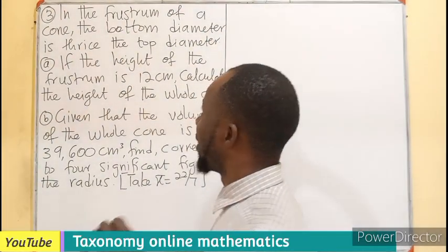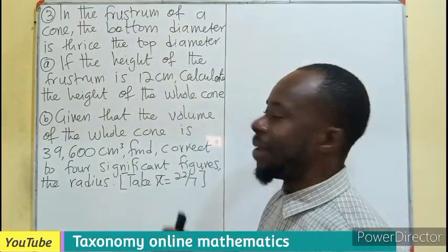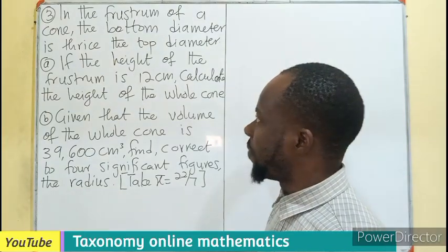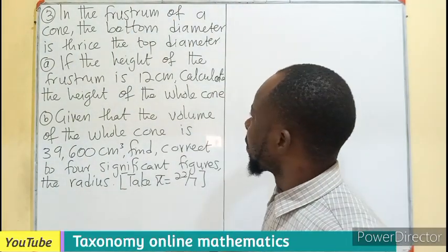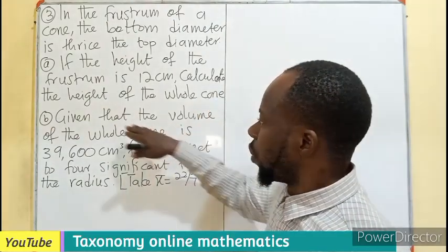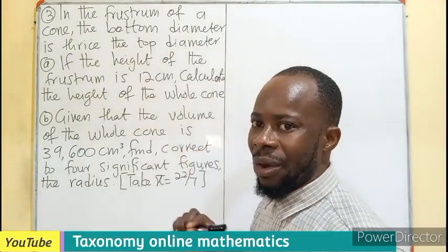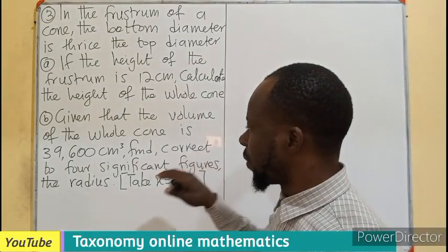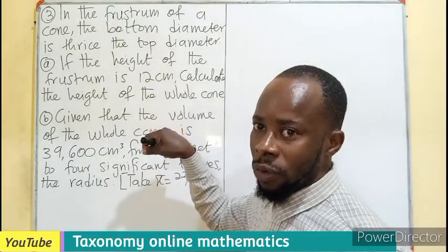In the frustum of a cone, the bottom diameter is three times, that is thrice the top diameter. If the height of the frustum is 12 cm, calculate the height of the whole cone. Then two, given that the volume of the whole cone is 39,600 cm cubed, find correct to four significant figures the radius of the cone.